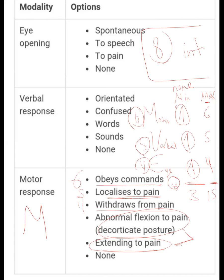The abnormal flexion decorticate posture takes a motor score of three — as seen in the video, the patient's hands are abnormally flexed. The decerebrate extension posture takes a motor score of two. And none takes one. This covers the motor scoring.